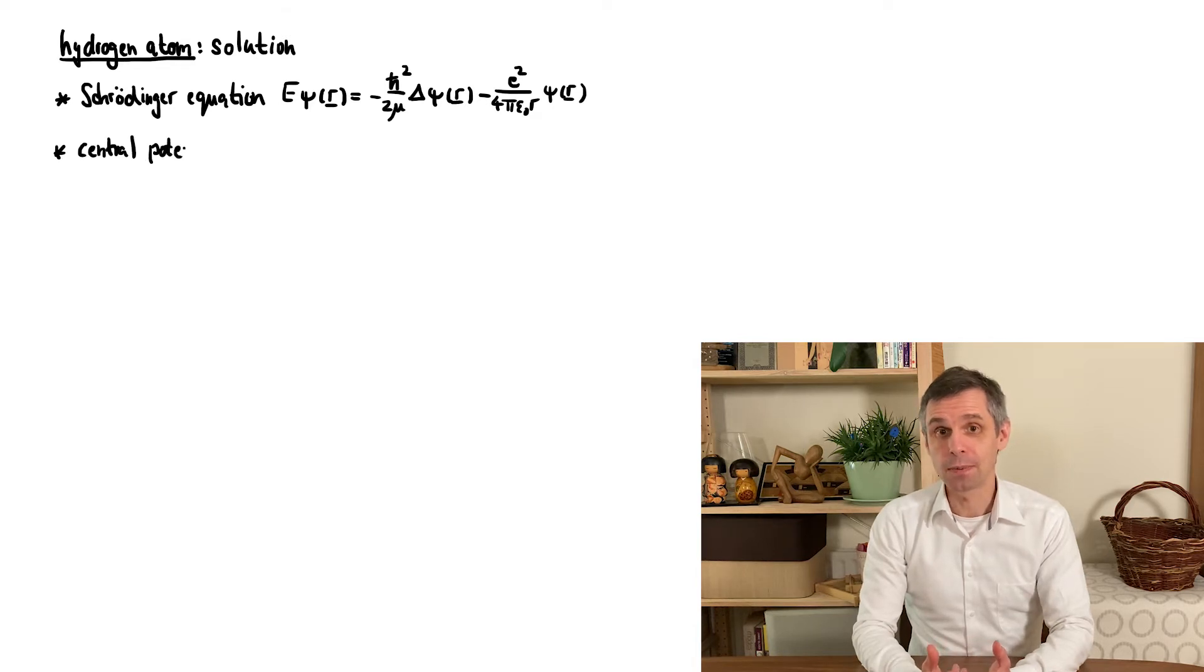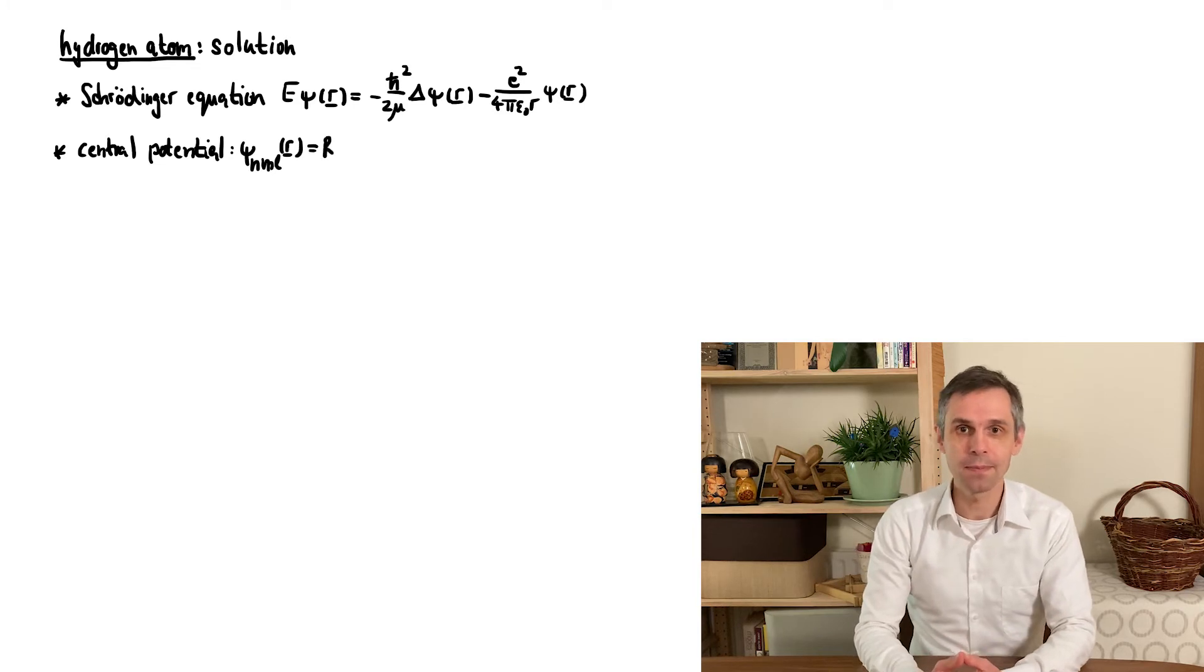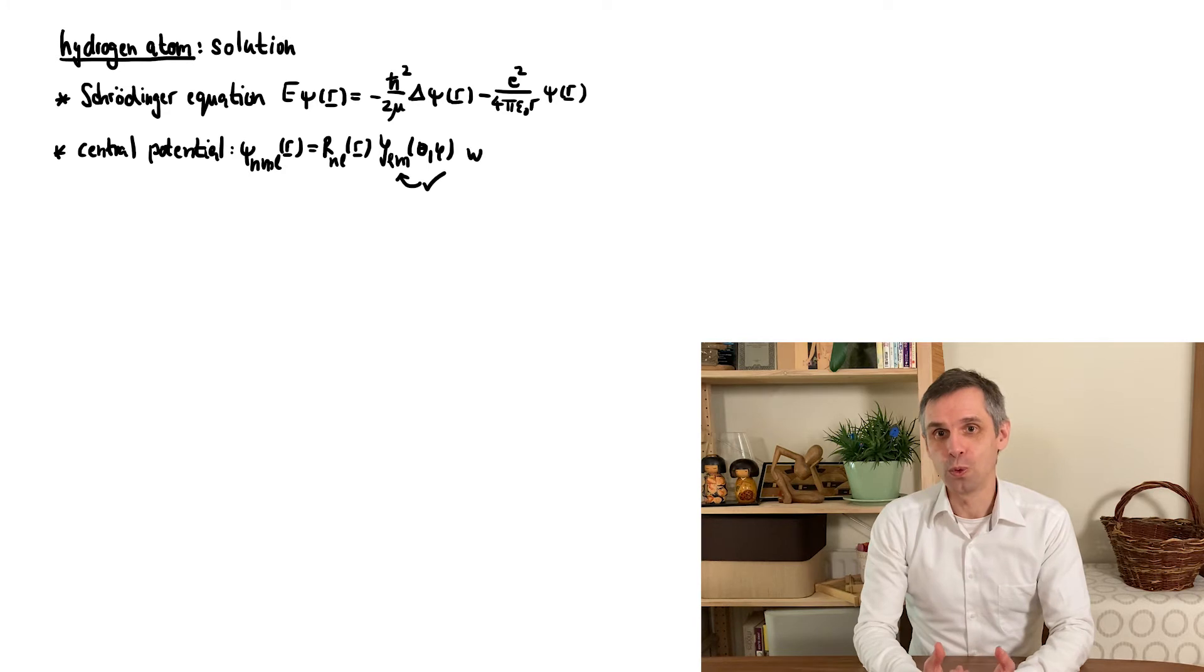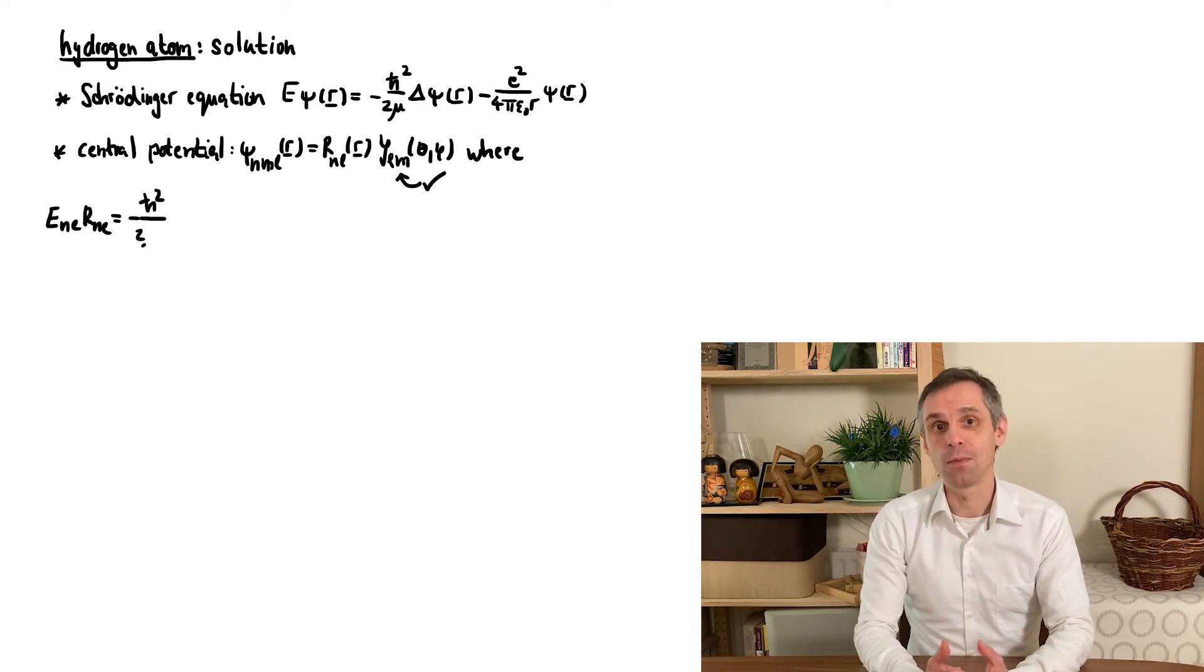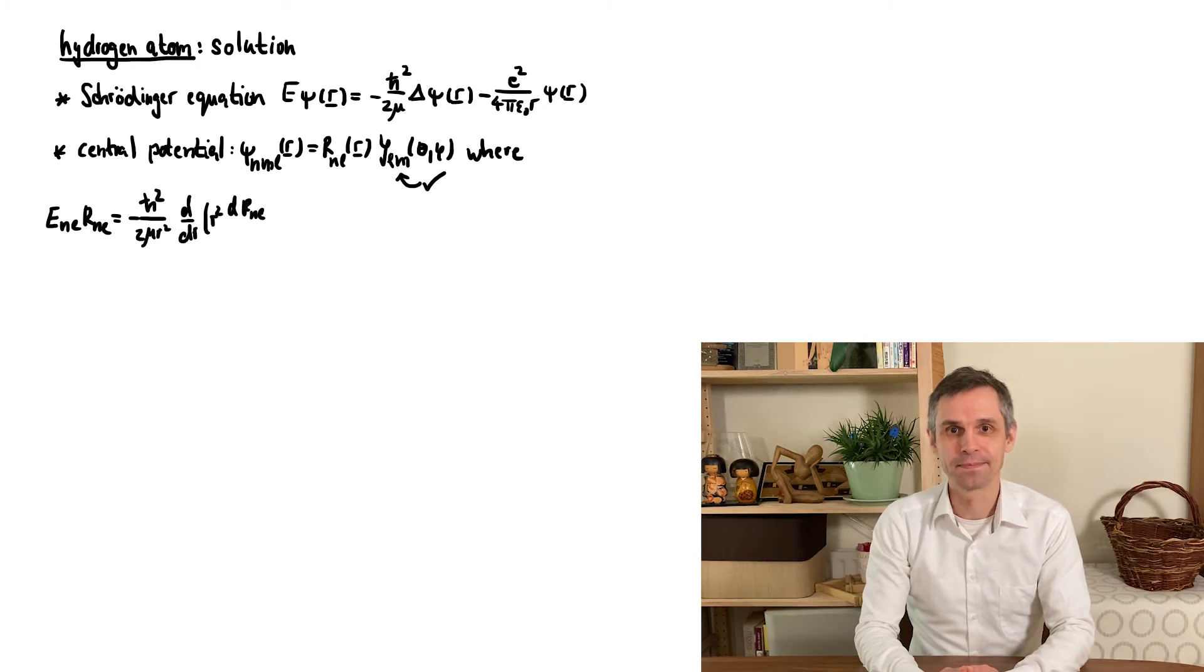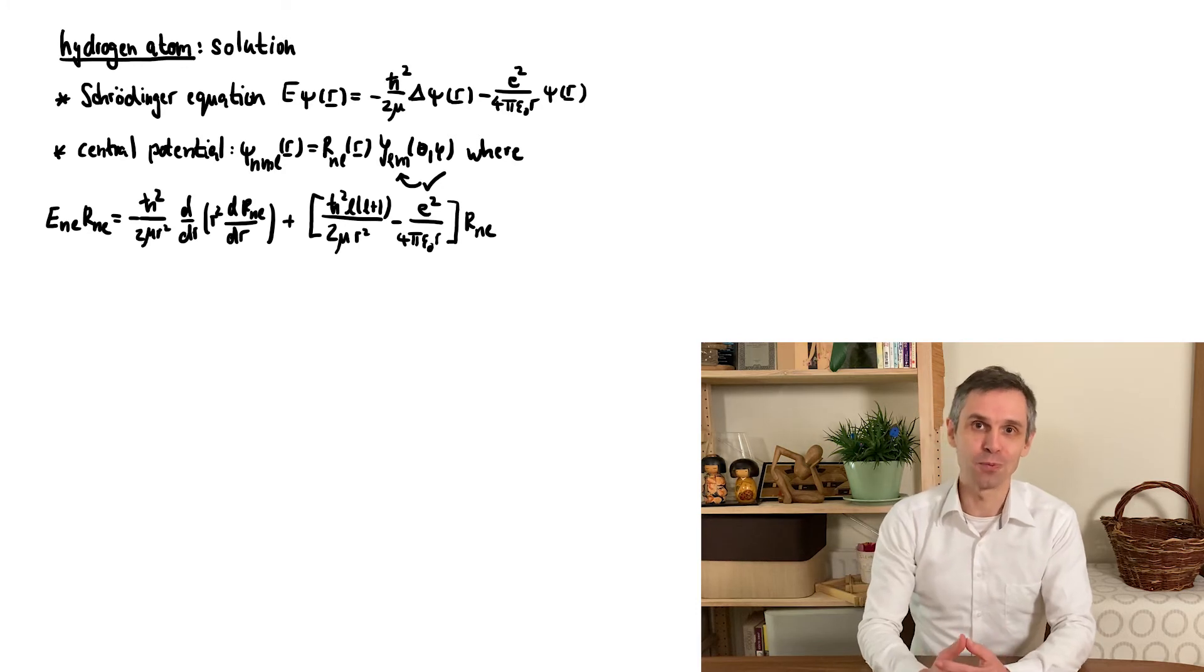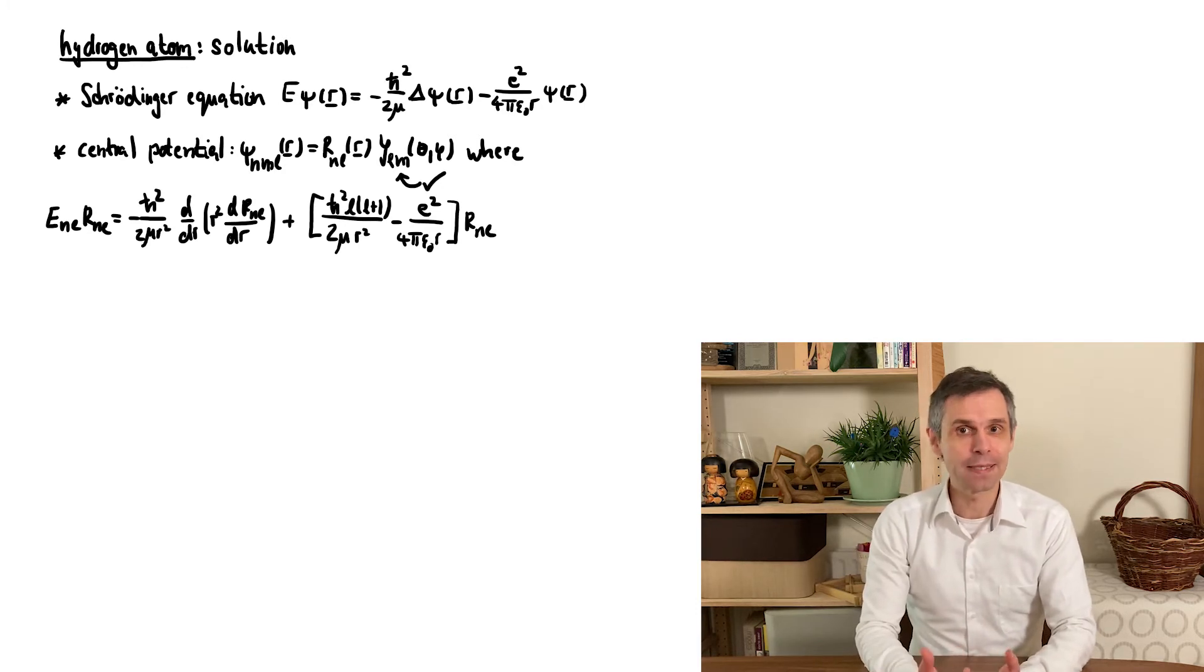We already worked out that we can separate out the angular part associated with angular momentum. We will soon return to this simple picture, so we are left with the radial Schrödinger equation as given here with the explicit form of this potential. To be concrete, I have here already included the quantum numbers, taking care which objects can depend on which number.